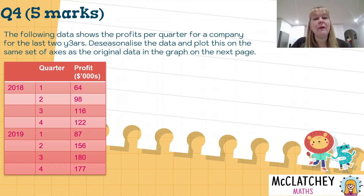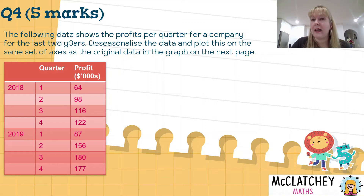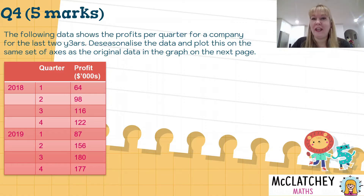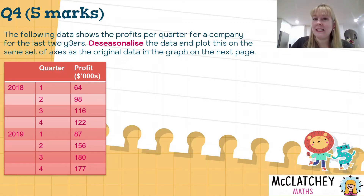The following data shows the profits per quarter for a company for the last two years. De-seasonalise the data and plot this on the same set of axes as the original data in the graph on the next page. Don't worry about the graph just yet — we'll get to that shortly — but firstly we're interested in de-seasonalising the data, and that is our key word here.